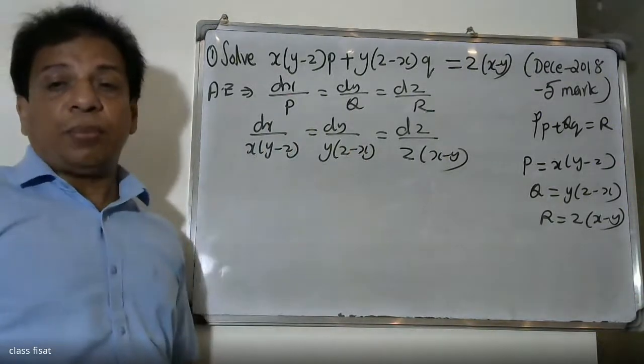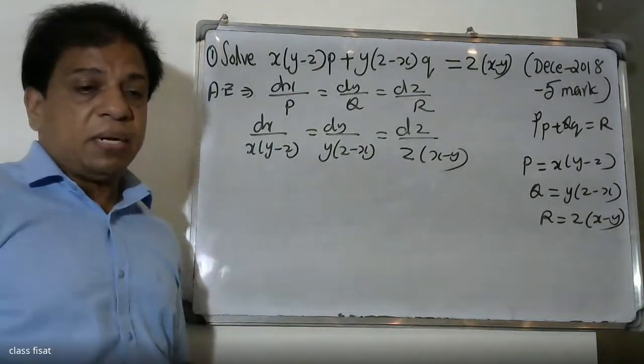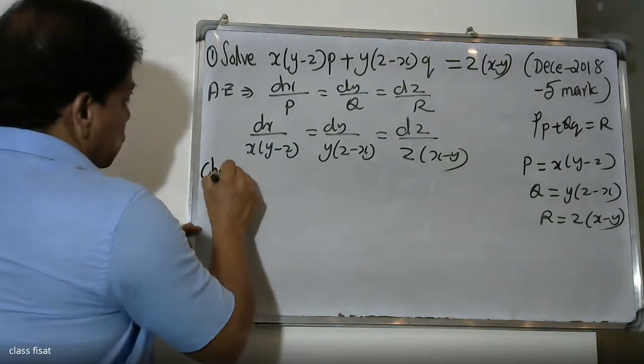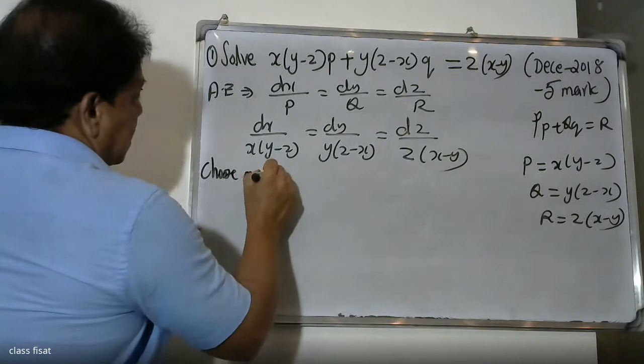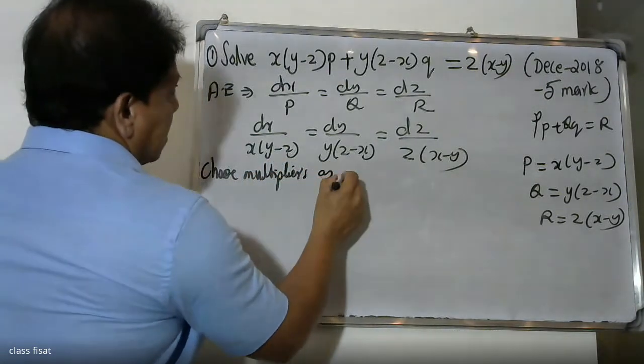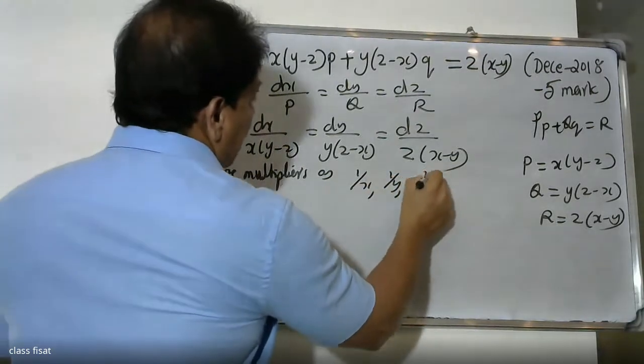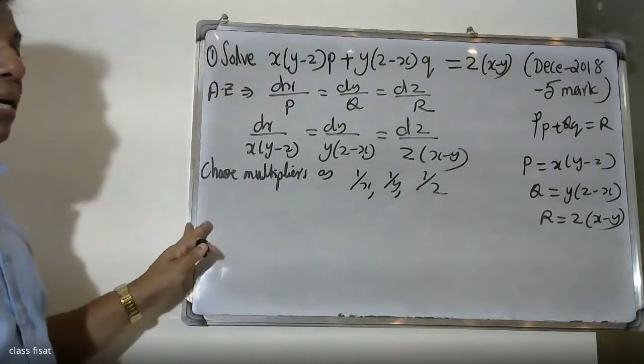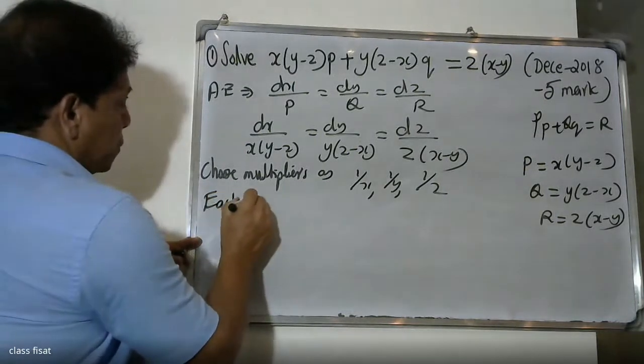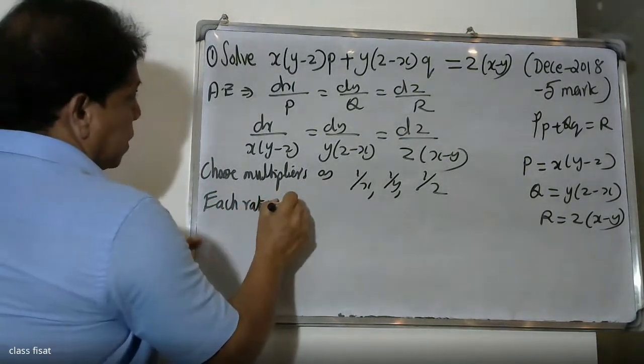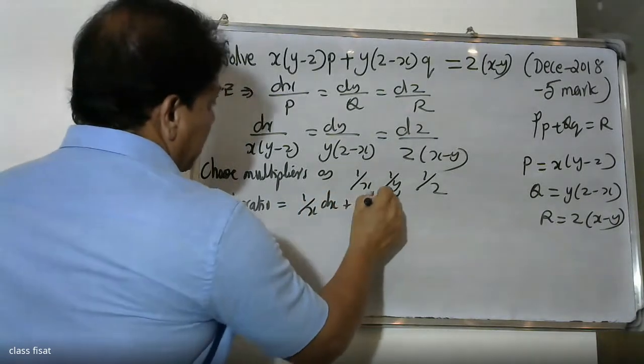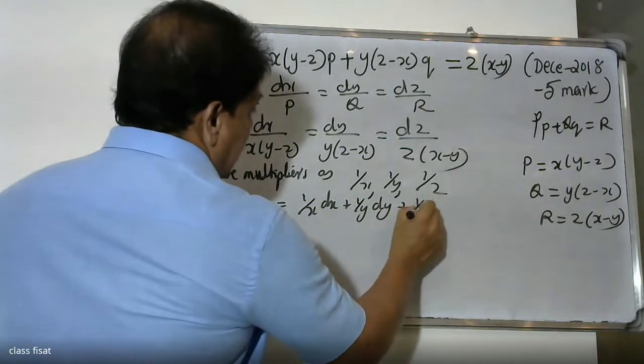We'll use the multiplier method. Choose the multipliers as 1/x, 1/y, 1/z. By the multiplier method, each ratio is equal to (1/x)dx + (1/y)dy + (1/z)dz.